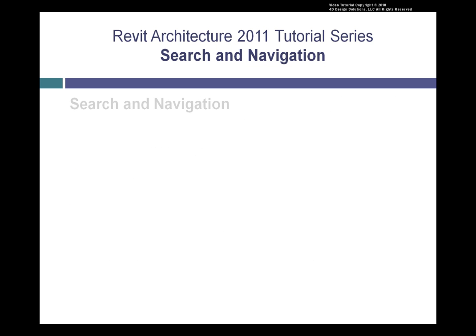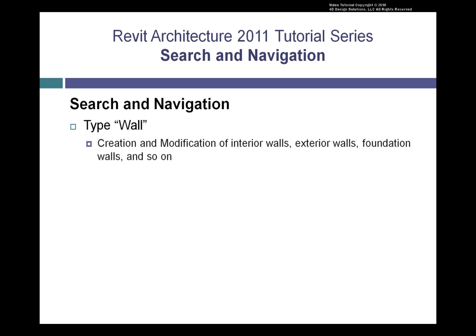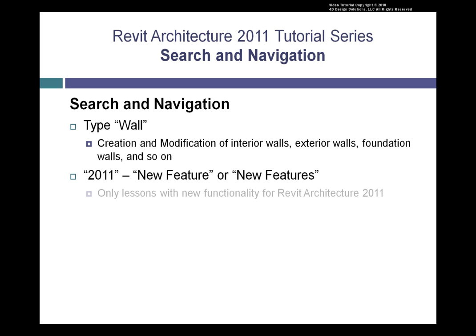We've added additional searching capabilities with our keyword search. For example, if you type the word 'wall', the search results will show you all of the lessons related to creating and modifying interior walls, exterior walls, foundation walls, and so on. And for those of you coming from previous versions of Revit Architecture who just want to learn about the new features in this release, by searching for '2011', 'new feature', or 'new features', you'll be directed to a list of lessons illustrating just the new functions and features added to Revit Architecture 2011.